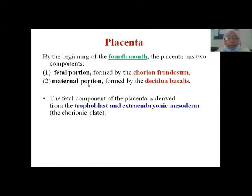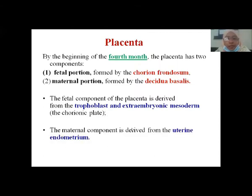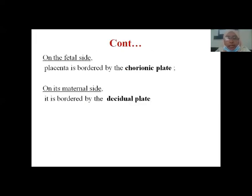The fetal portion of the placenta — that is, the Chorion frondosum — develops from trophoblast and extra-embryonic mesoderm, which is also known as the Chorionic plate. The maternal portion develops from the uterine endometrium, that is, Decidua basalis. The pregnant uterus endometrium is known as Decidua. On the fetal side, the placenta is bordered by the Chorionic plate, and on the maternal side it is bordered by the Decidual plate.